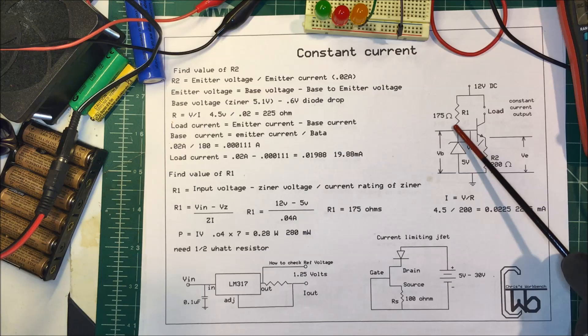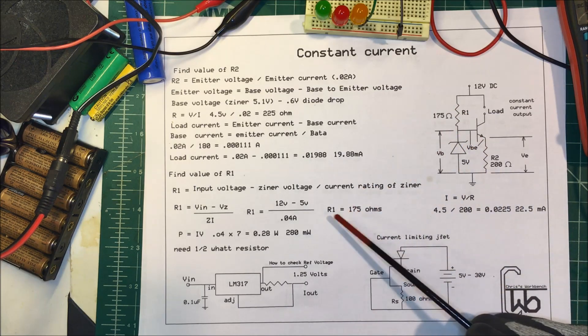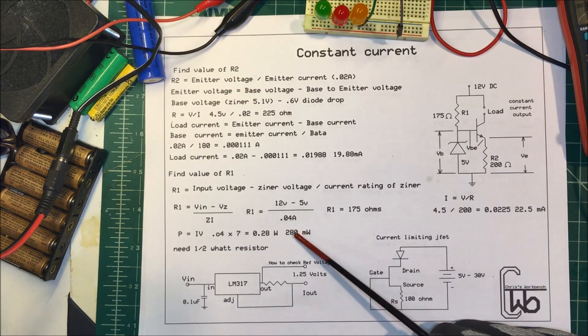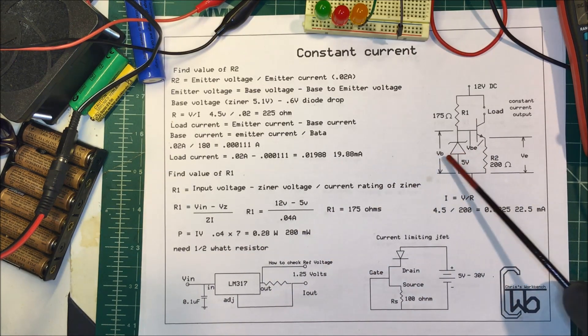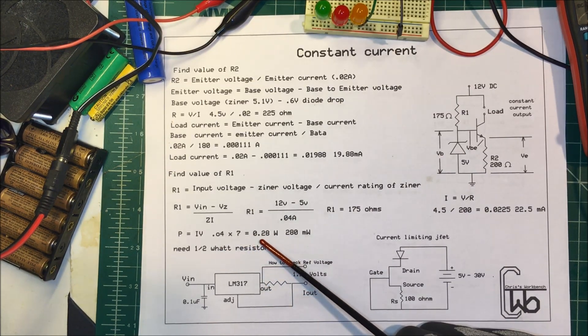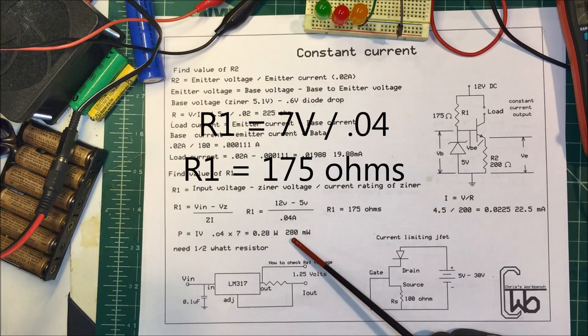The zener is good for about 50 milliamps - I'm going to use 40. So 0.04 times 7 is 0.28 watts, so it's going to be 280 milliwatts.